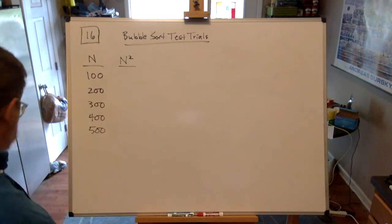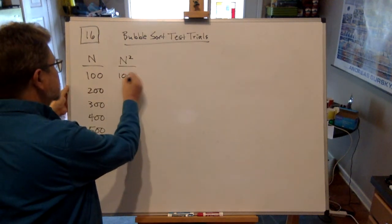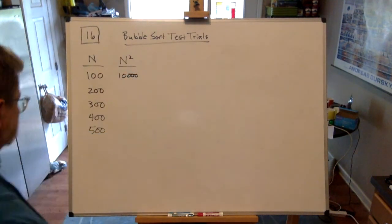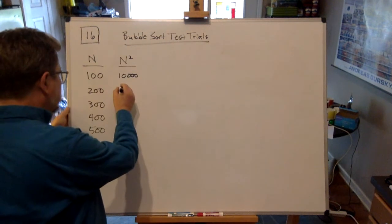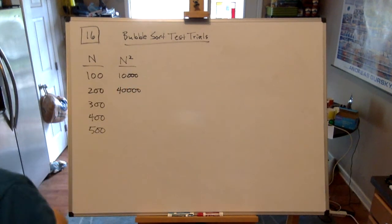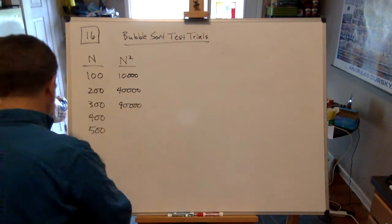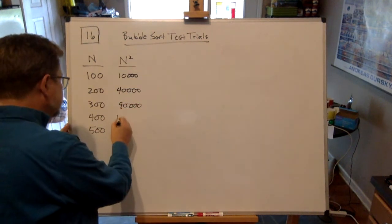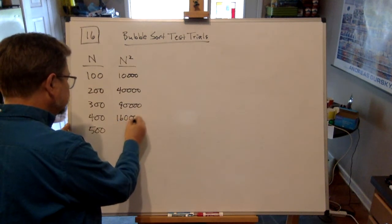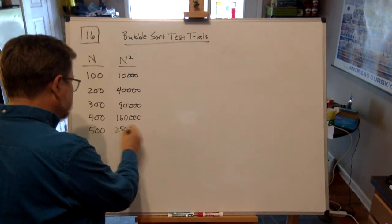The more interesting case is the n squared case, which is what we're proportional to if it's the worst case. To get n squared, you multiply these numbers by themselves: 100 squared is 10,000, 200 squared is 40,000, 300 squared is 90,000, 400 squared is 160,000, 500 squared is 250,000.